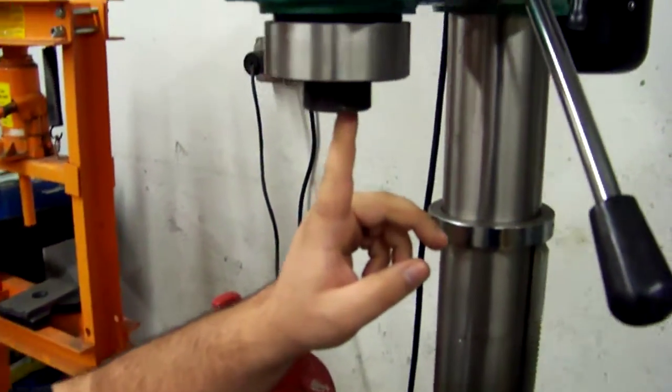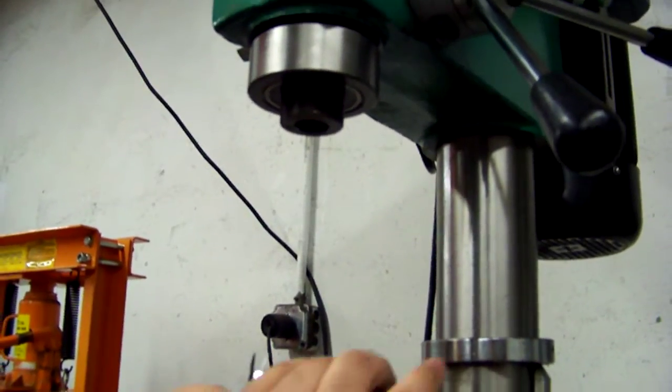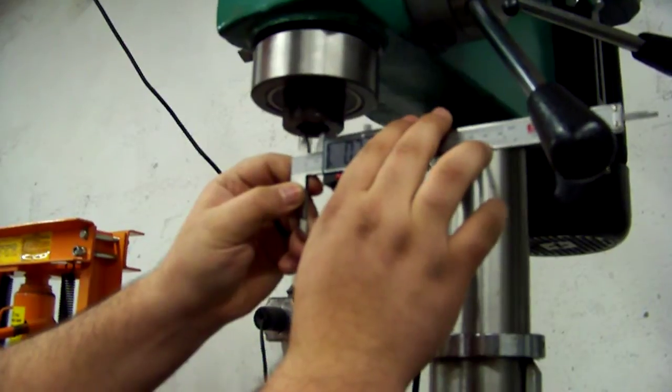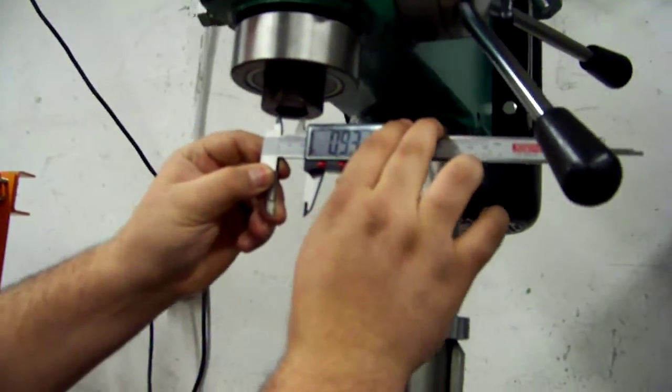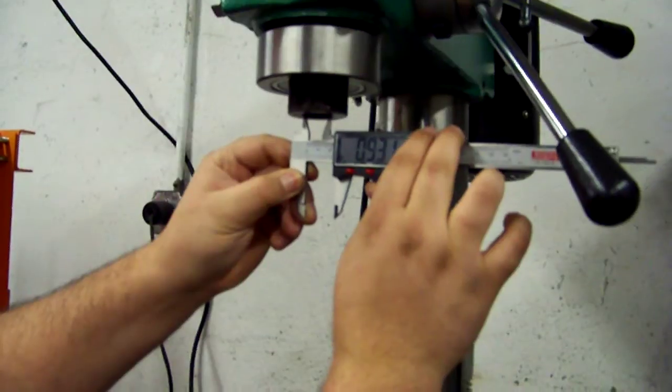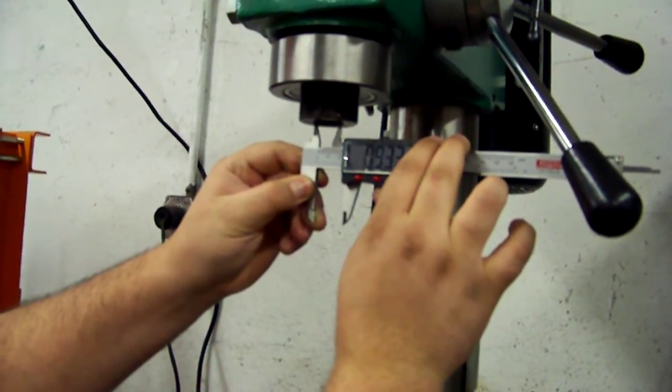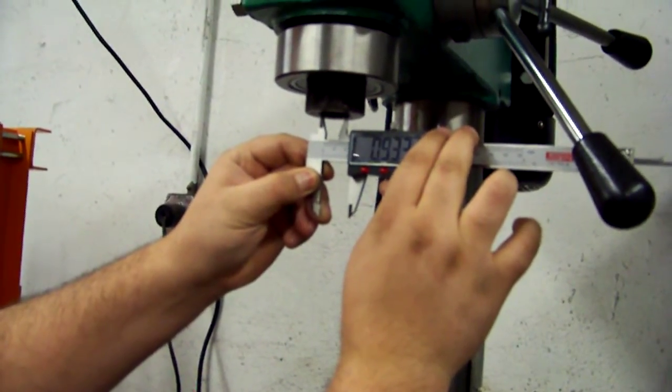When trying to determine what size Morse taper you have, simply place the caliper right underneath here and that will provide you with a dimension relatively close to what is needed for the Morse taper. We have here .933.